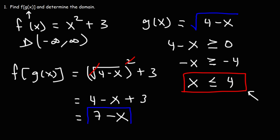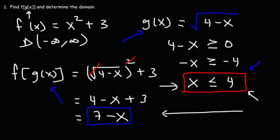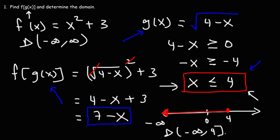This simplified form of the composite function looks like it has no restrictions on x, but because it came from g of x which had a square root, it does have the restriction x is less than or equal to 4. On a number line, we have a closed circle at 4 and shade to the left. In interval notation, the domain is negative infinity to 4 with a bracket, since 4 is included. That is the domain of this composite function f of g of x.